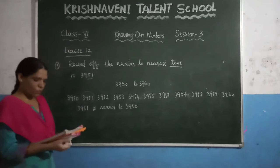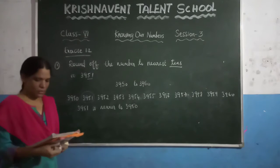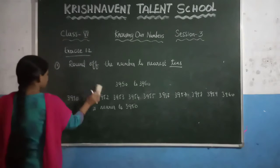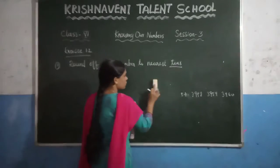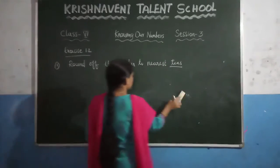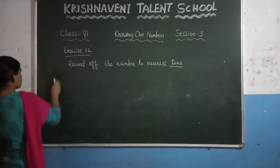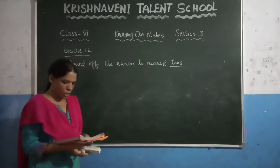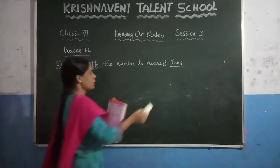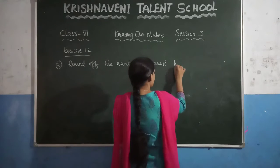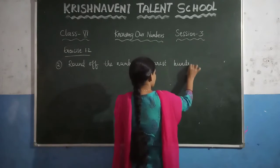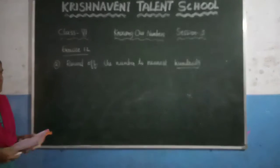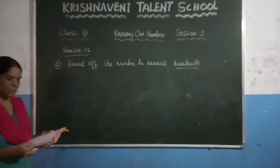The next problem: they have given 4,409 — you can do it in a similar way. Now see the second question. They ask to round off the following numbers to the nearest hundreds. So you have to write to the nearest hundreds. Previously they asked to round off to the nearest tens; now in this question they ask to round off to the nearest hundreds.